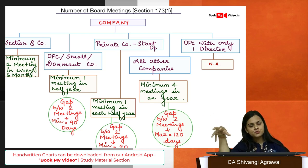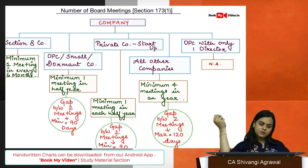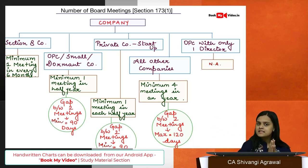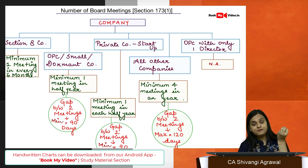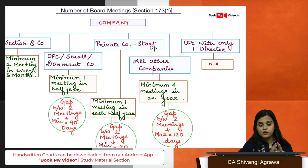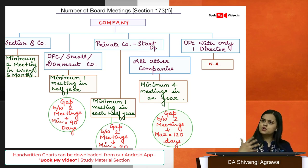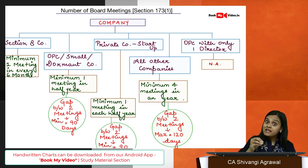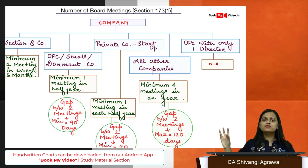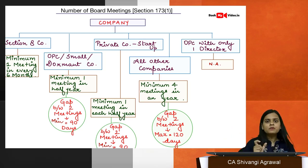Whenever the board has to take a decision, all the directors collectively known as the board must resolve the issue — a resolution is passed. This means voting happens: all directors give their assent or dissent. If a majority of directors present and voting agree, the board resolution is passed. If they don't agree, the resolution is considered lost. So decisions of the board of directors are taken by a board resolution.